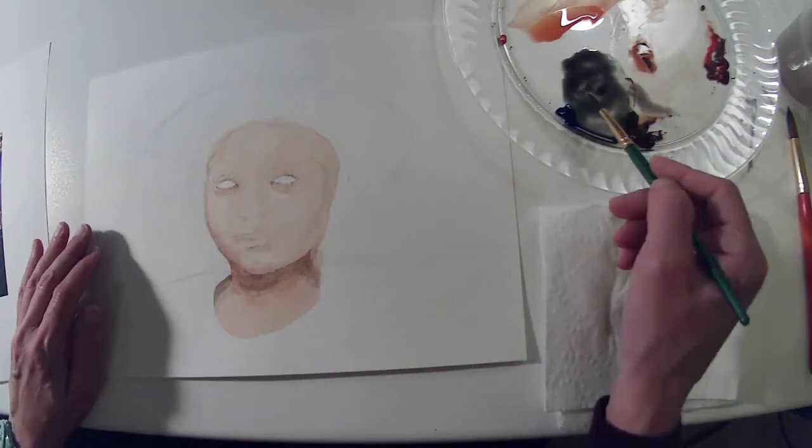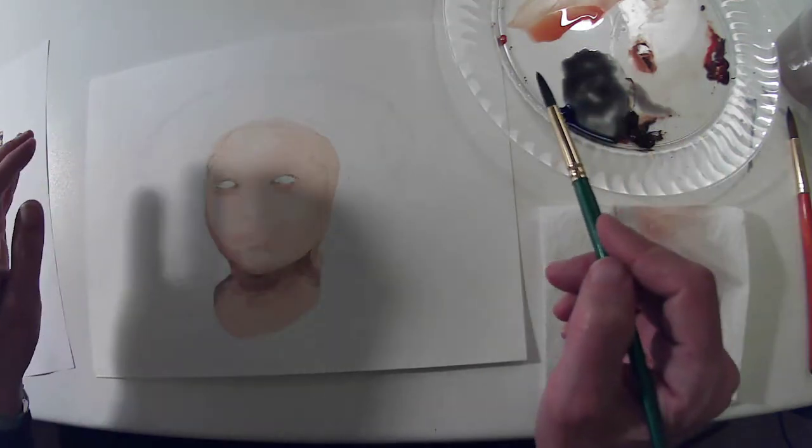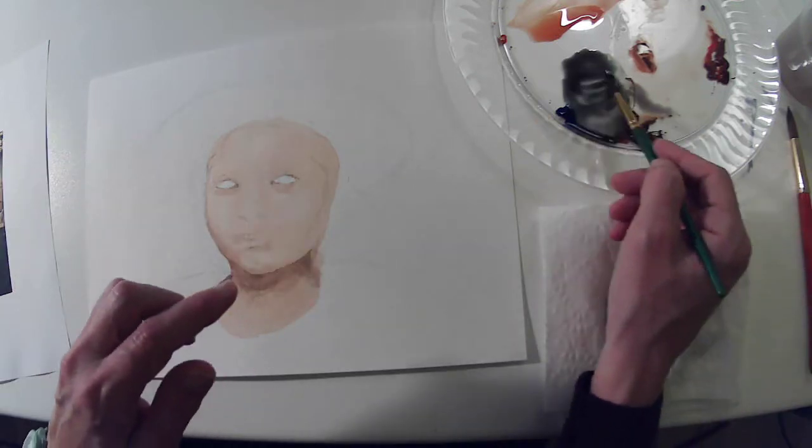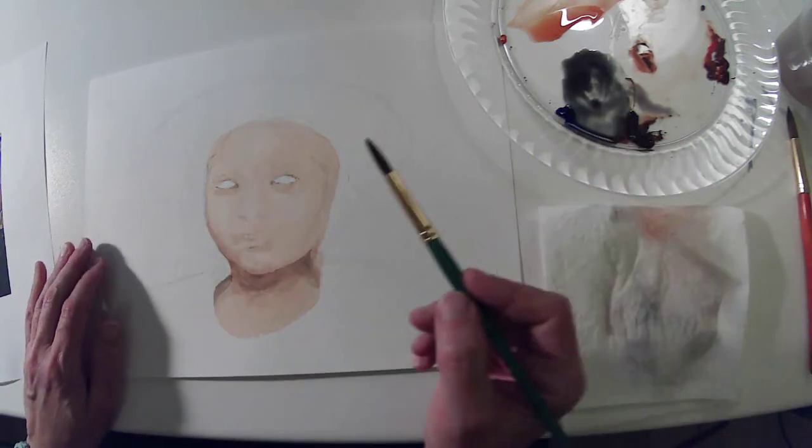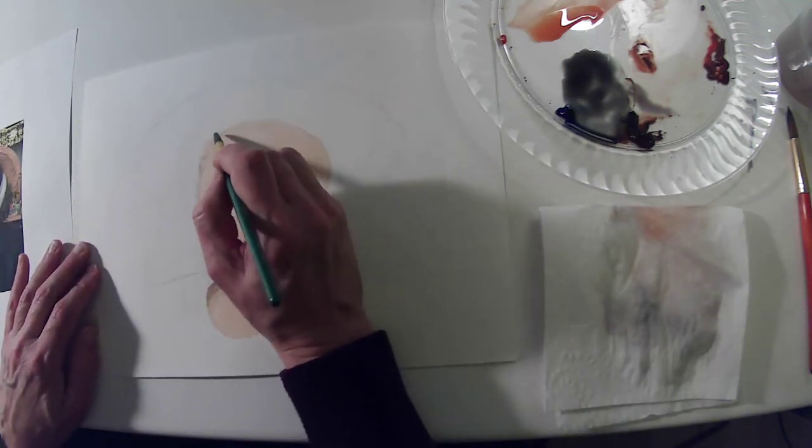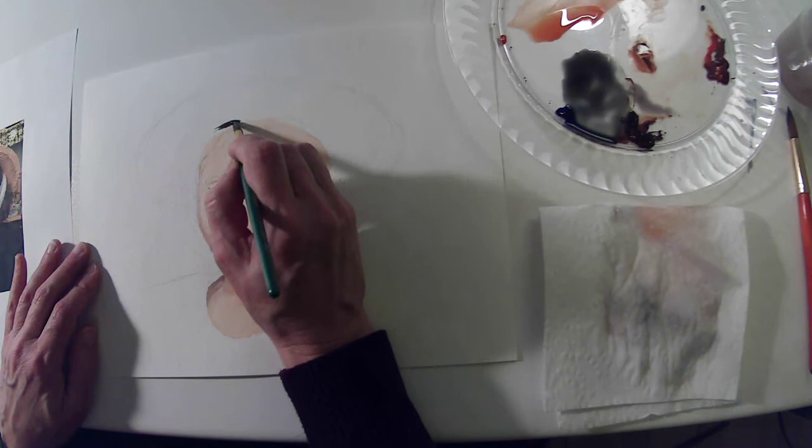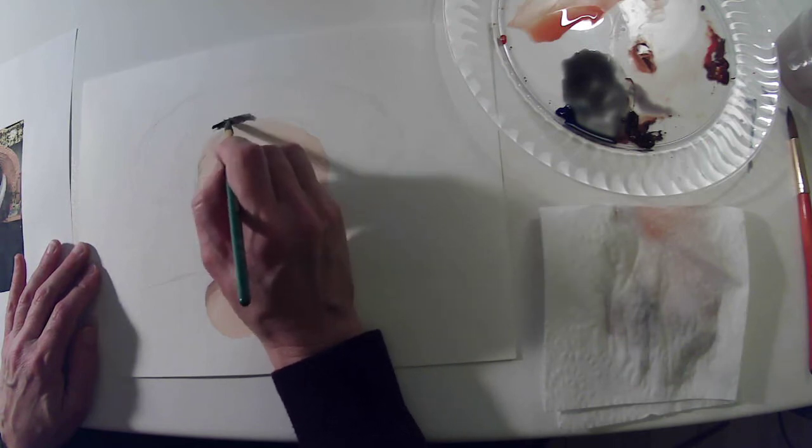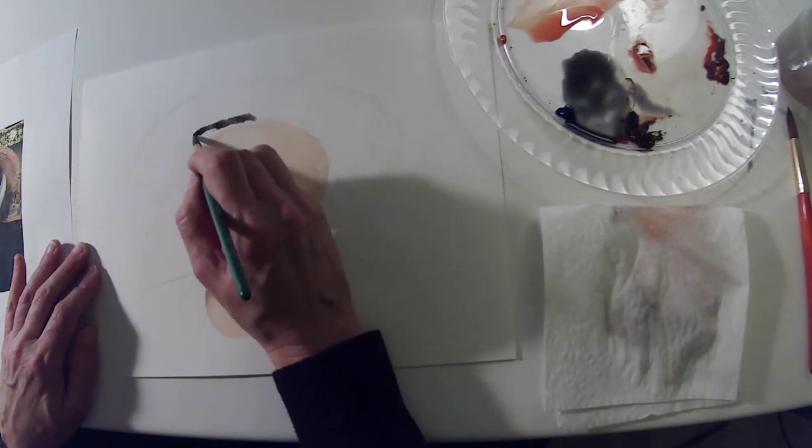And then I can switch back and forth. If I want it to lean cool, if I want it to be warmer, I switch toward the brown. So I like having those two. If I look at where the hair frames the face, I'm going to be a little bit more controlled with this outer edge.